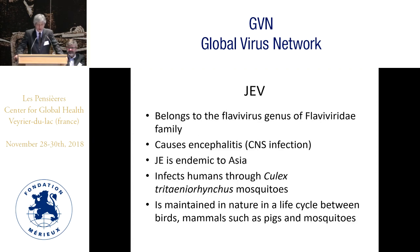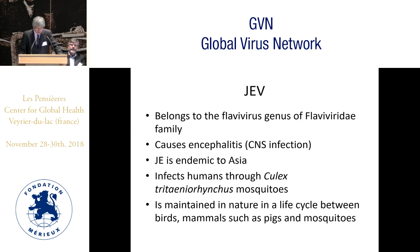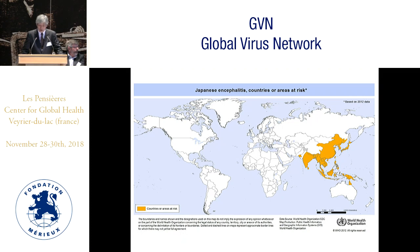Japanese encephalitis virus belongs to the flavivirus genus of the flavivirus family and it causes encephalitis. JEV is endemic to Asia and infects humans through Culex species mosquito bites. JEV is maintained in nature in a life cycle between birds, mammals such as pigs, and mosquitoes. JEV is endemic to Southeast Asia and also East Asia, including Japan, South Korea, and mainland China.